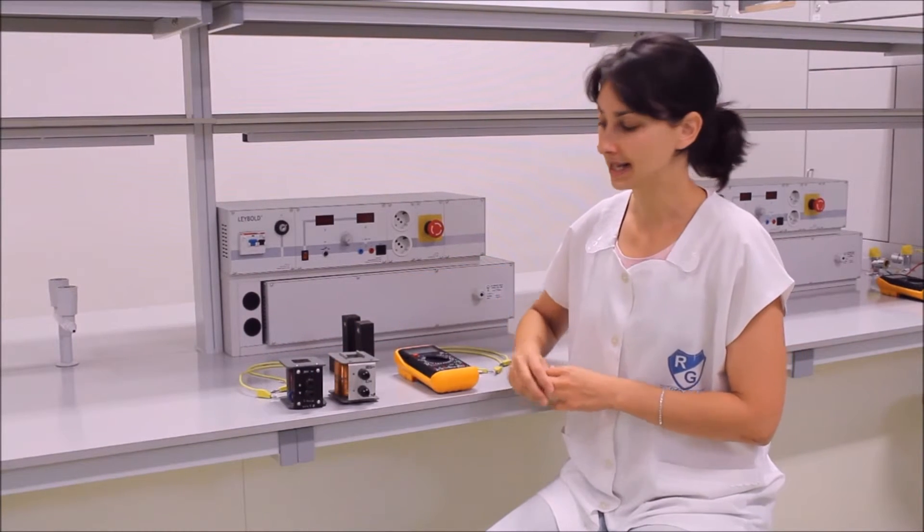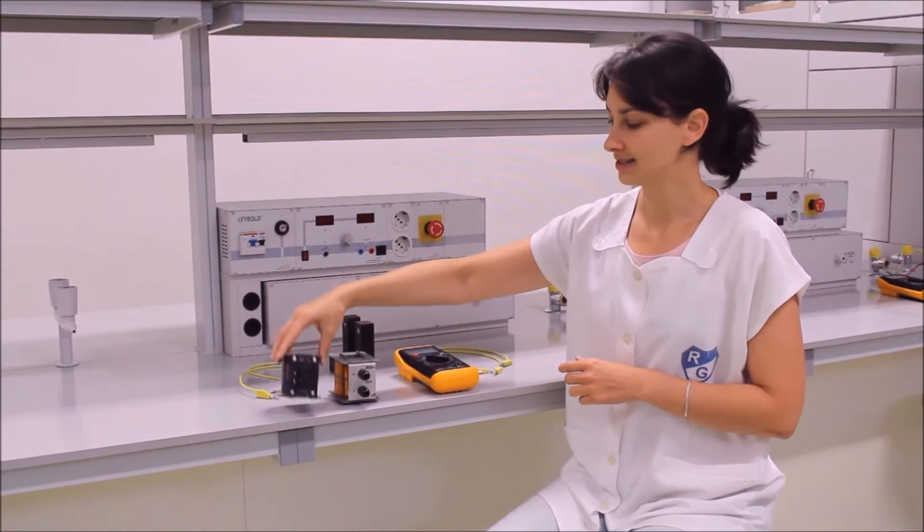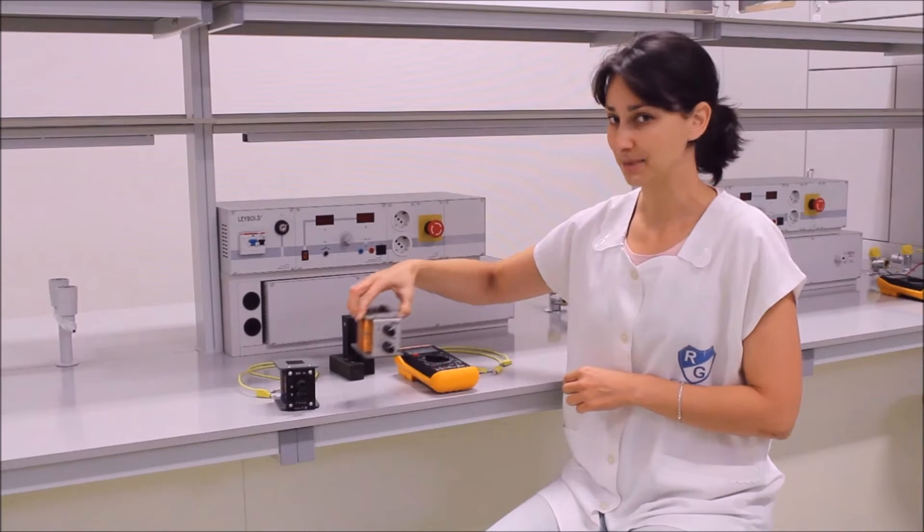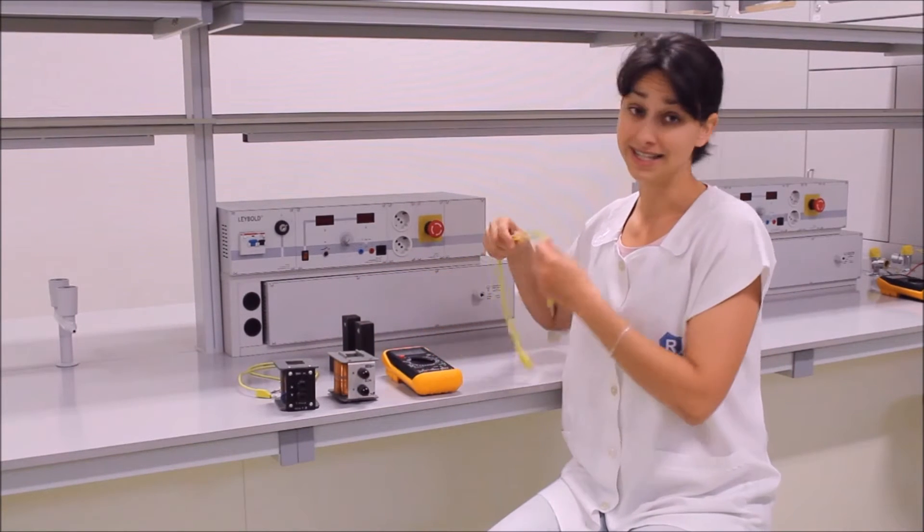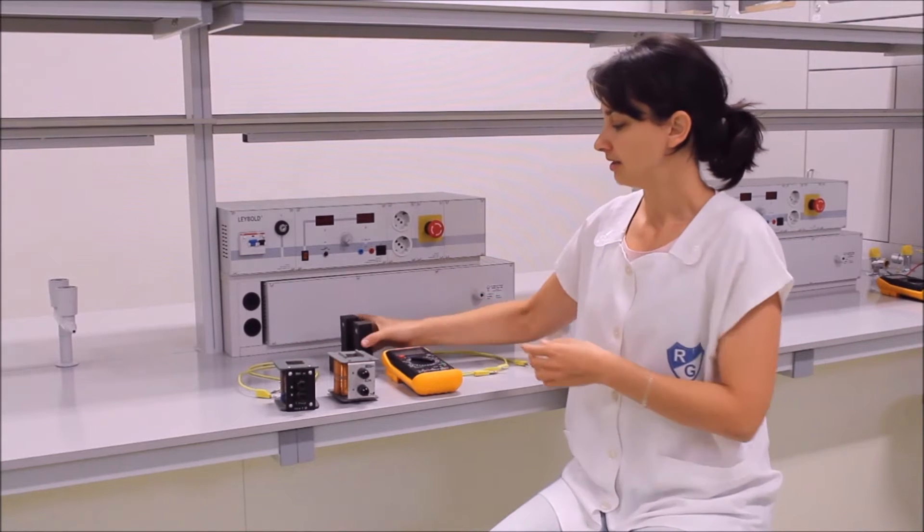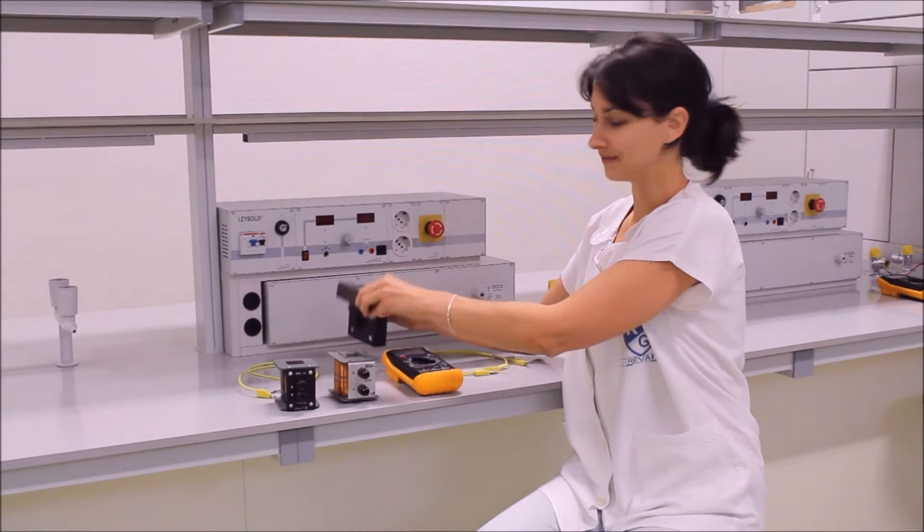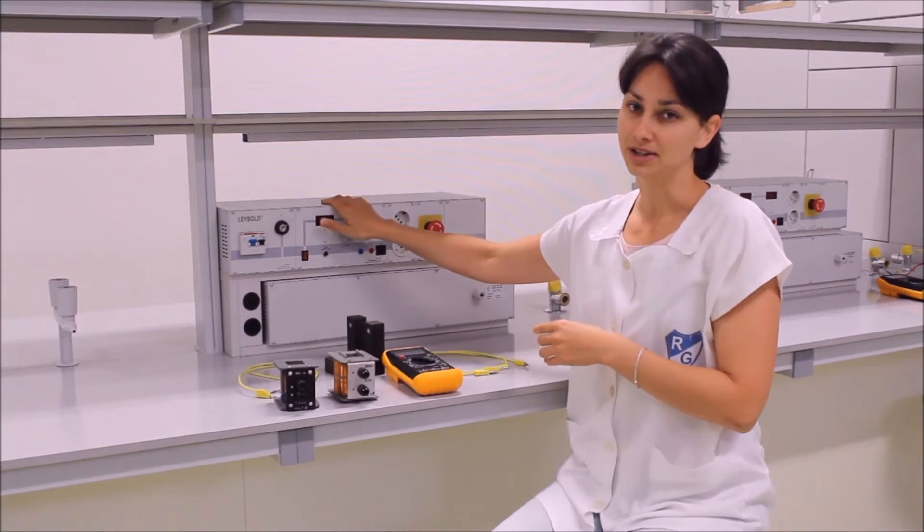A közös menet száma, az egyik 300, a másik pedig 600 menetes, multiméter, vezetéken, zárható vasmag, tápegység.